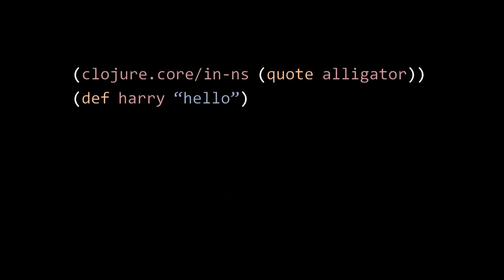Well first let's consider how you actually change what the current namespace is and how you actually even create a namespace. Here we're calling the function in-ns, which stands for in namespace, and we're calling it with the argument of a symbol alligator. What this does is switches the current namespace to the namespace alligator. If there is no namespace alligator before this, then it's created. So then in the next line, when we have a def, we are adding to the current namespace, which is the namespace alligator, not whatever it was before.